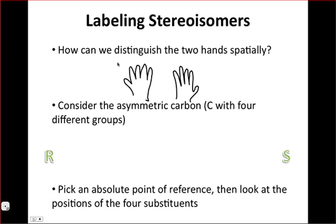Essentially what we have to do is arbitrarily call them by a name. The names that chemists use are the R and S labels. So R refers to one hand of molecule, S to another. So consider the asymmetric carbon atom with four different groups. Let's use the example we used before.